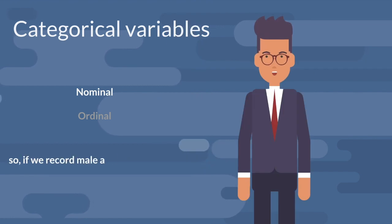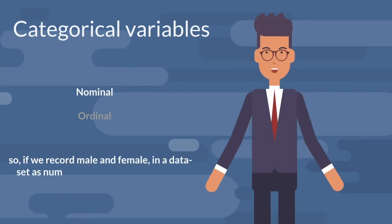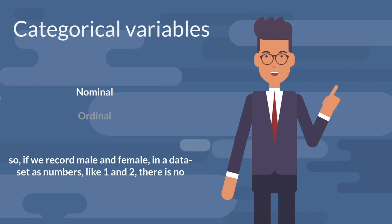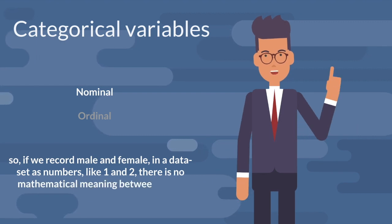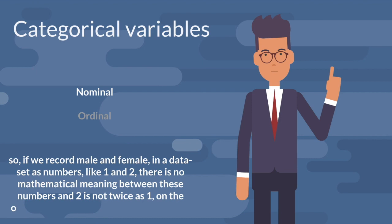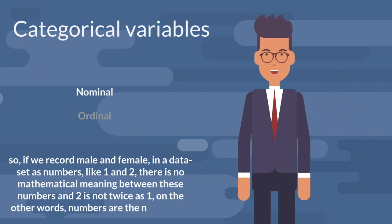So if we record male and female in a data set as numbers, like 1 and 2, there is no mathematical meaning between these numbers and 2 is not twice as 1. In other words, numbers are the new names.